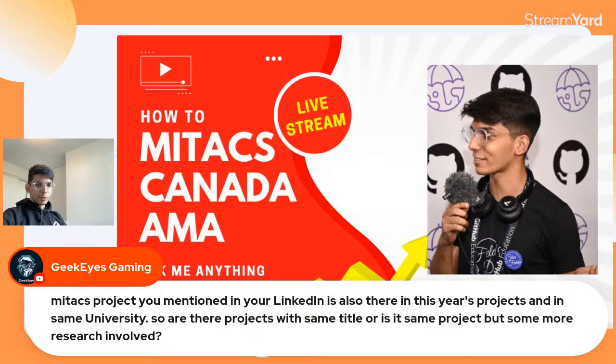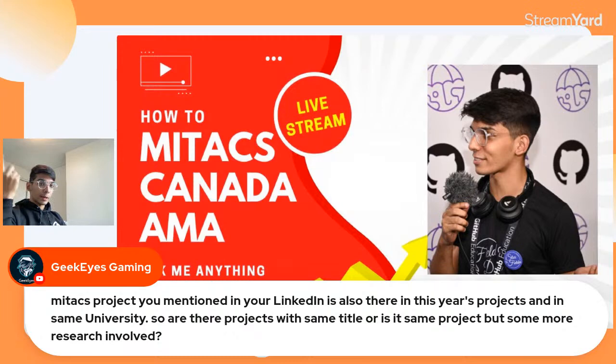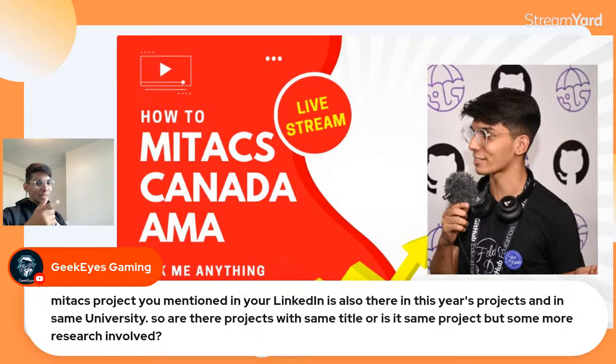There are projects with the same title in multiple years — is there more research to be done? A single research project goes on for around four to five years, with a lot of work and different phases. That's why the Mitacs project I worked on was there in my cycle, is also in the current cycle, and is in the next cycle too. If you get selected for my project, you'll be using the code I already wrote — so that will be interesting.